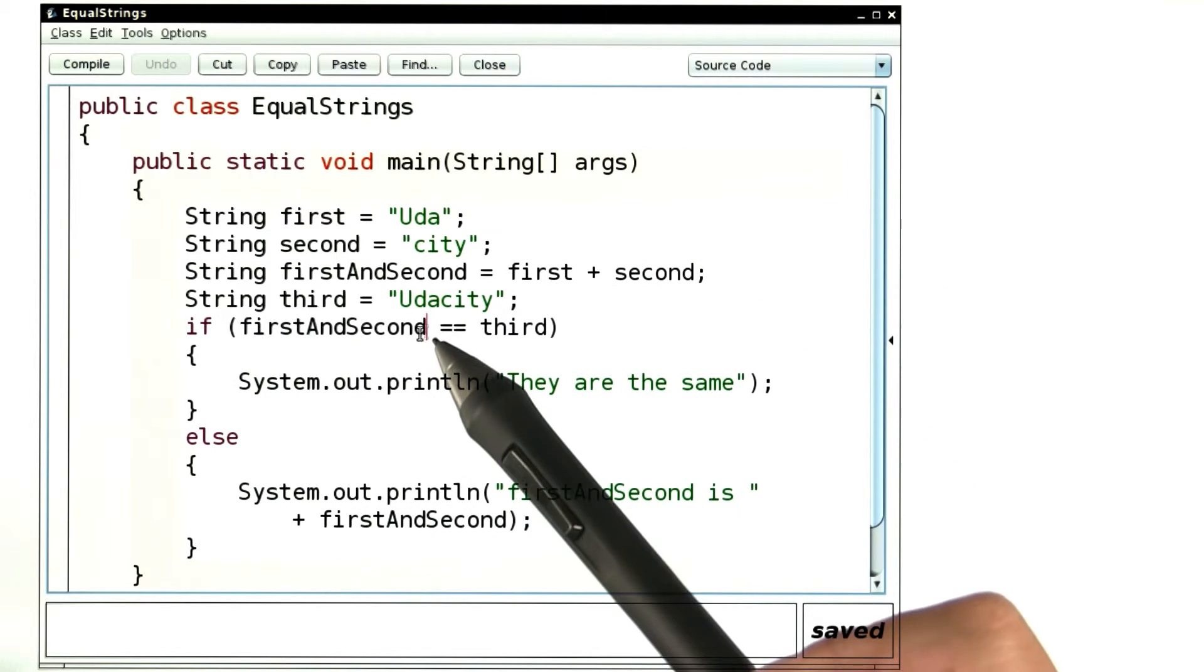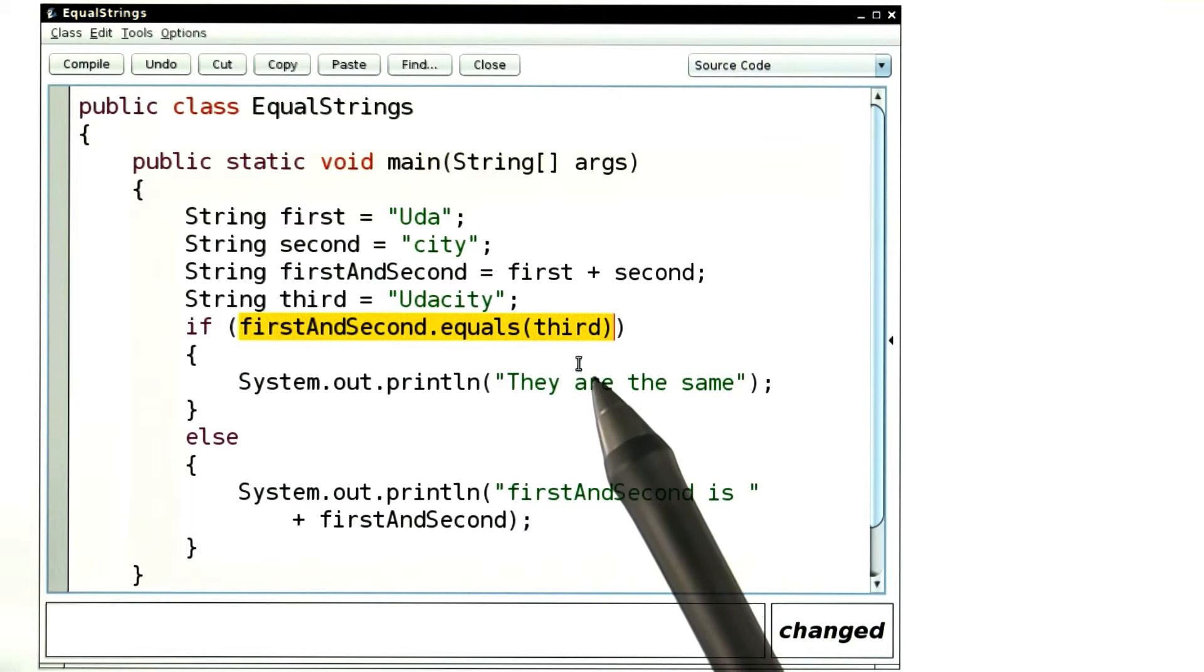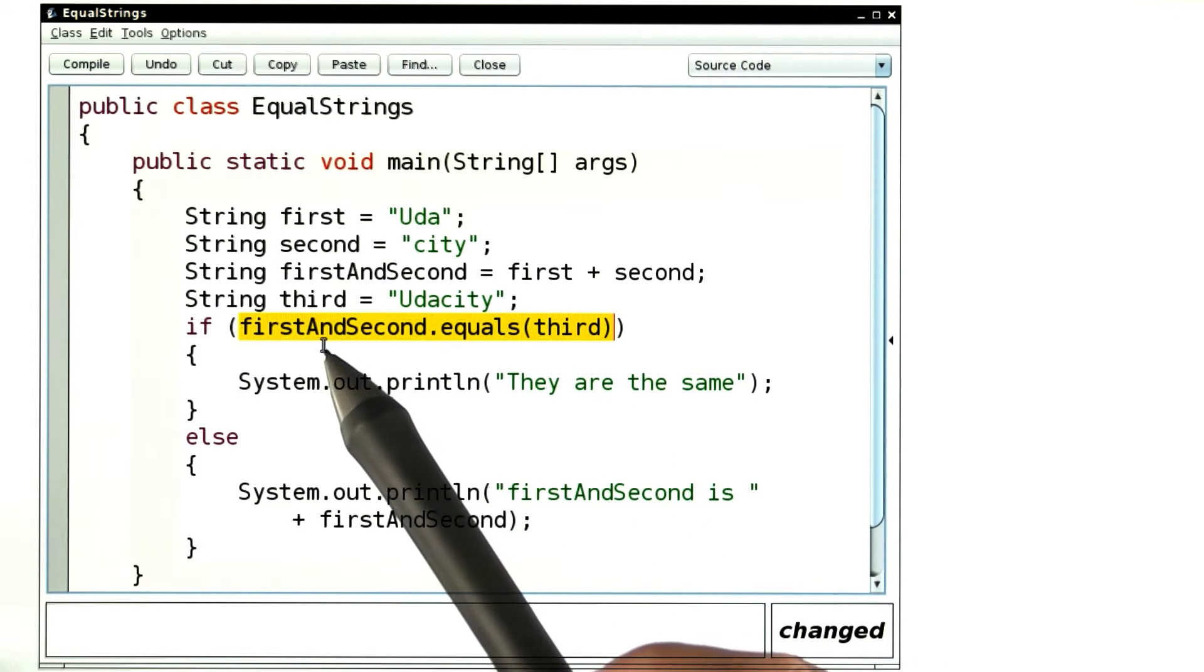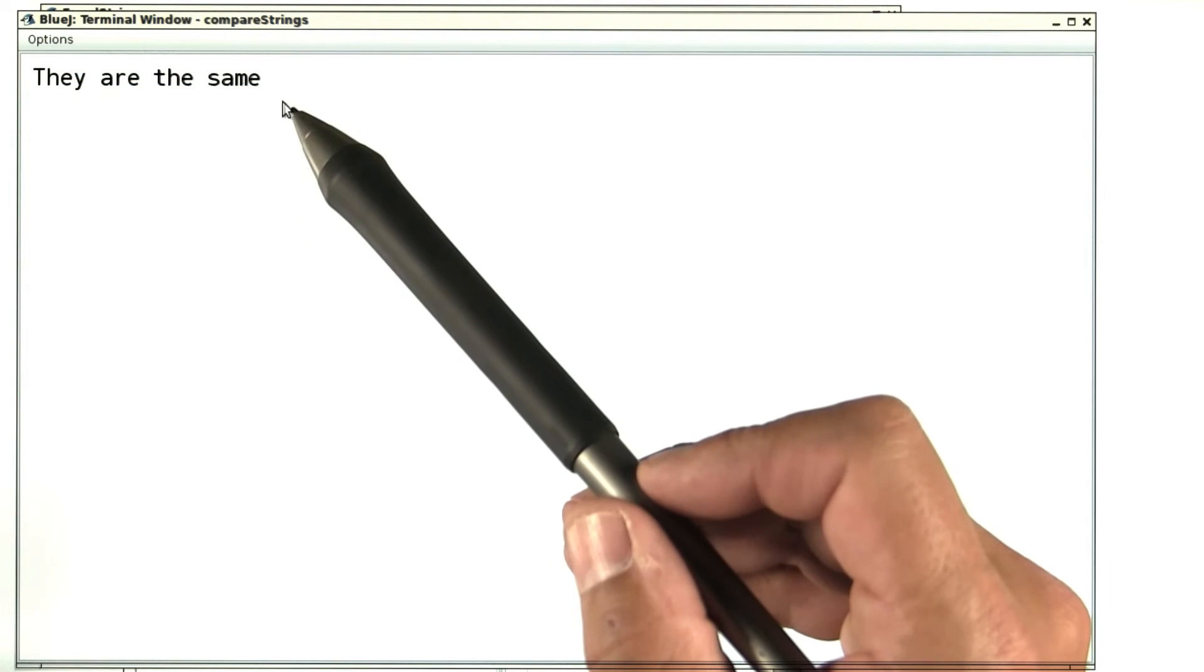Over here, I will check whether first and second equals third. Here's the test. We call the equals method on first and second and pass it third as a parameter. Now when we run the program, it will work as expected. The program prints, they are the same.